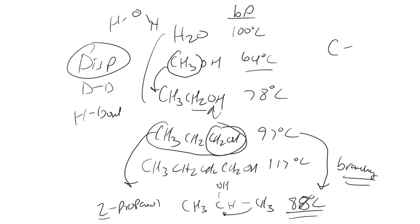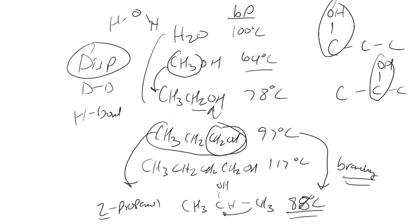The difference is just whether you put the hydroxyl group on the first carbon or the second — those are the only two possibilities for propanol, since the third is the same as the first. So do you put the hydroxyl on the second or on the first, then saturate the other positions with hydrogen?